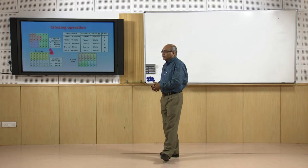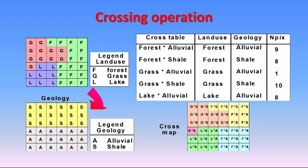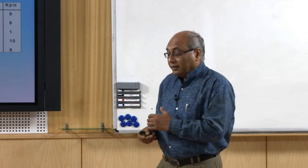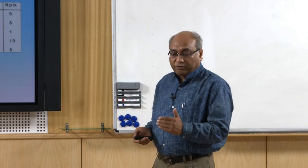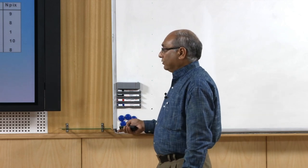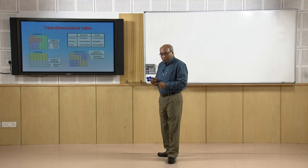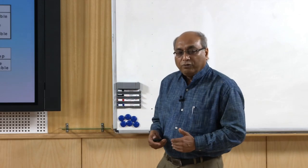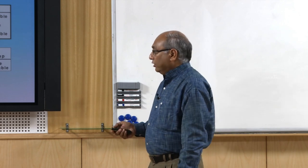Cross tables or cross operations are also possible. In a cross table, combinations like forest multiplied by alluvial, forest multiplied by shale, and so on are generated, enriching the attribute data. Basically, these operations produce a map due to the dynamic linkage between spatial objects and attribute data. Major changes occur mainly in the attribute tables, which is why these are called cross tables. Depending on requirements, these four major types of overlay operations can be chosen.